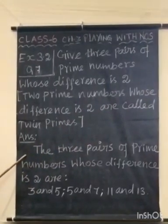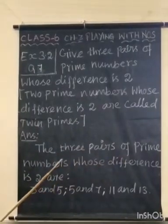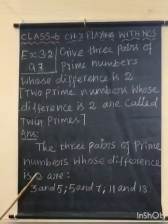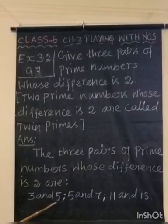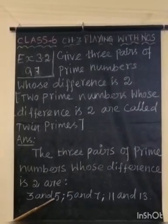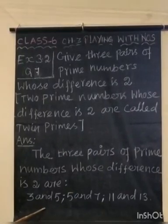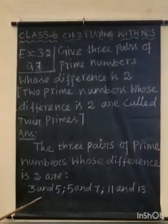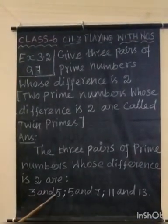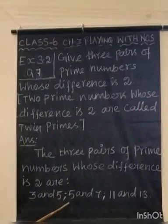The 3 pairs of prime numbers whose difference is 2 are 3 and 5. Here 5 minus 3 is 2, so the difference is 2. 3 and 5 are prime numbers.